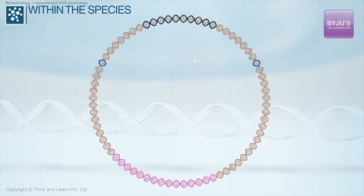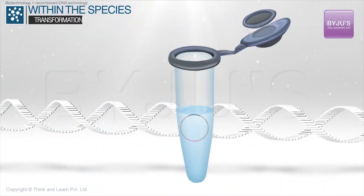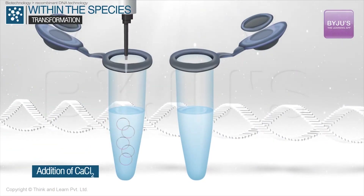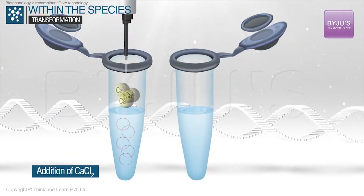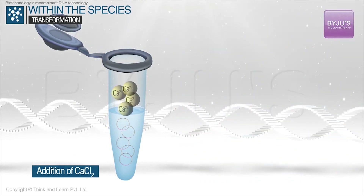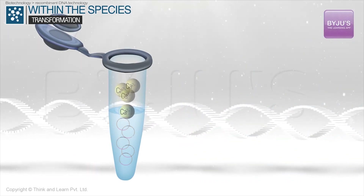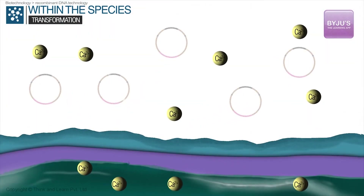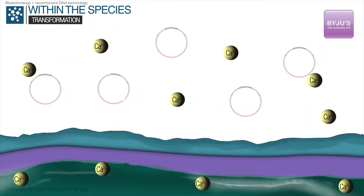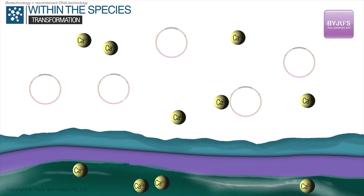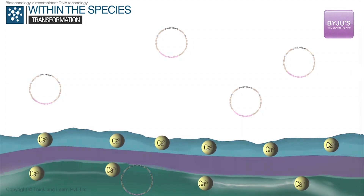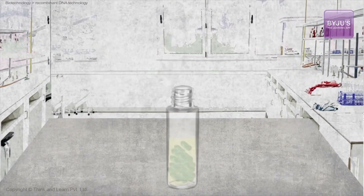Finally, in a step called transformation, the recombinant DNA was transferred into bacteria by adding calcium chloride to a solution containing E. coli bacteria. Calcium chloride is a salt that renders cell walls permeable for DNA. This artificial process, found nowhere in nature, enabled the new plasmid to be introduced into the bacteria.